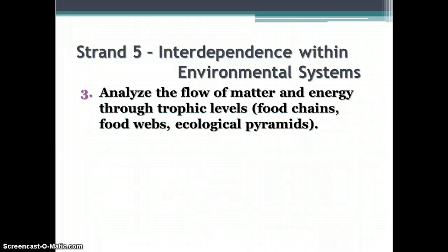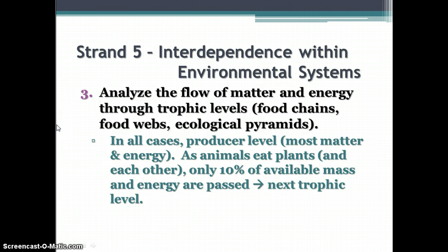Analyze the flow of matter and energy through the trophic levels. Trophic levels are the levels of the food chain — producer, primary consumer, secondary consumer, and so forth. These questions are about food chains, food webs, and ecological pyramids. In all cases, the producer level has the most matter and energy. As animals eat plants and each other, only 10% of the available mass and energy are passed on to the next trophic level. The most energy is available at the lowest level of the food chain; the least is available at the highest level.